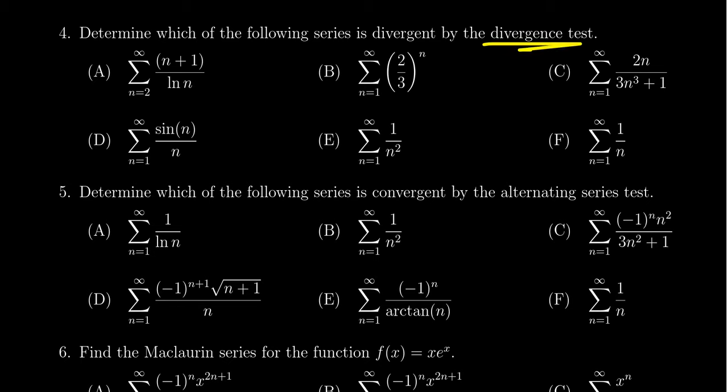Remember what the divergence test tells us. The divergence test tells us that if the sequence in play does not converge to 0, then the series is divergent. We're not saying the sequence is divergent because it could actually converge towards like 7 or something. So we have to find a divergent series by the divergence test. Let's just go through these things one by one.